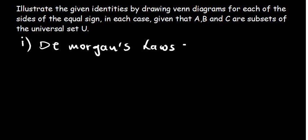In this video, we're going to go over illustrating the given identities by drawing the Venn diagrams for each of the sides, as the question reads.